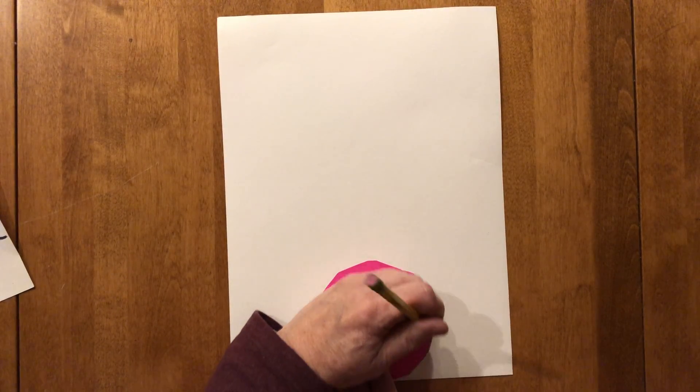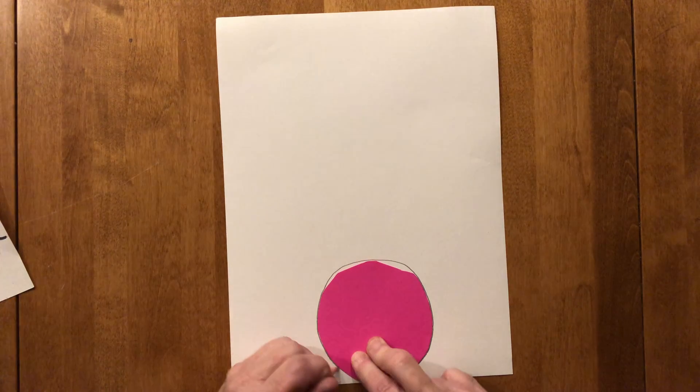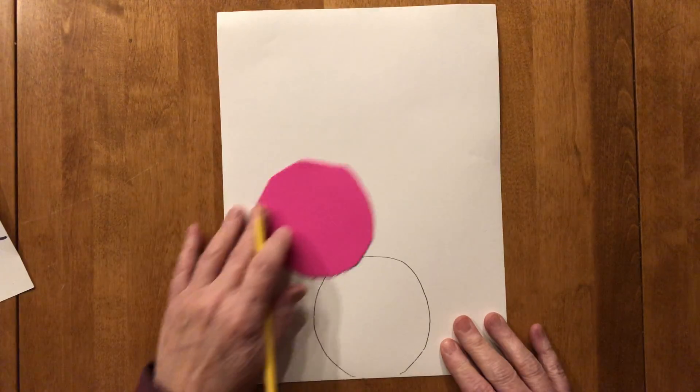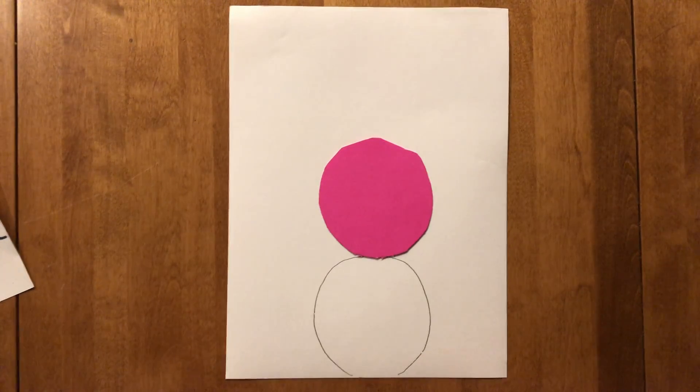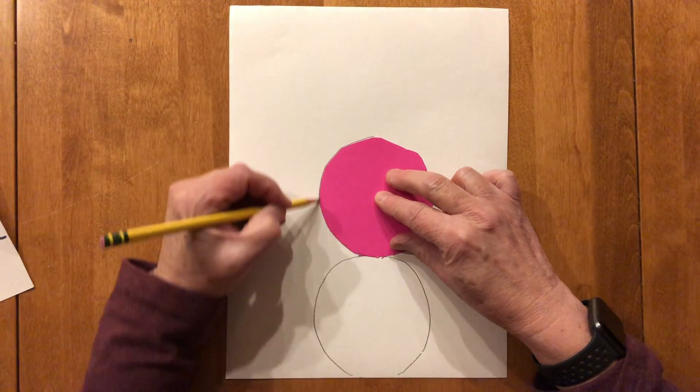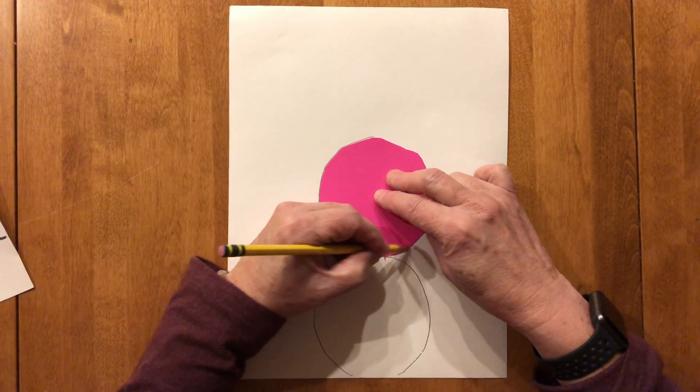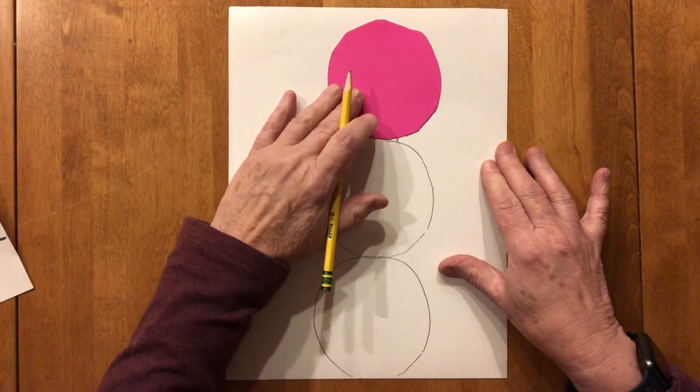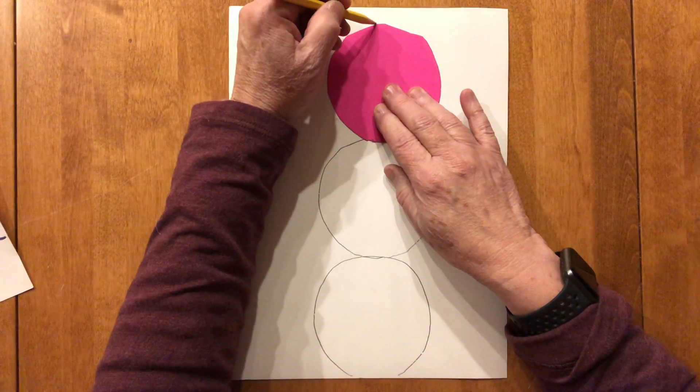Okay, and so I'm going to trace my pink tracing dot one time. It doesn't have to be perfect because these are snowmen or snow people. Then I'm going to put it on top of the one I just traced and I'm going to trace it a second time and then I'm going to put it on top of that one and I'm going to trace it a third time.